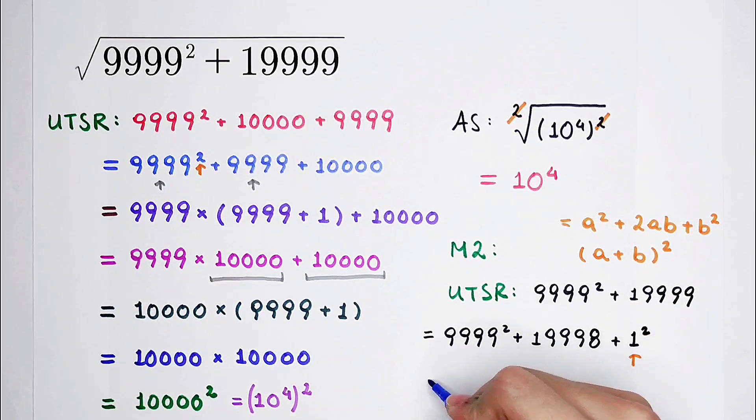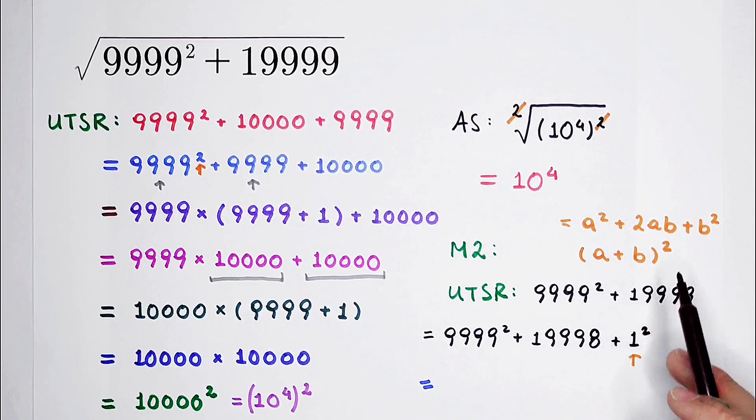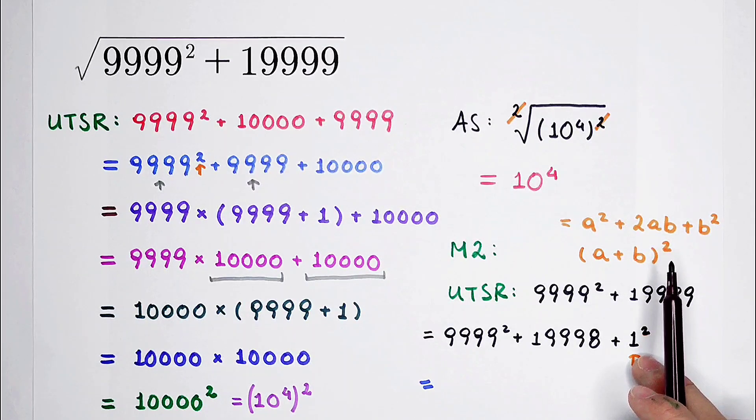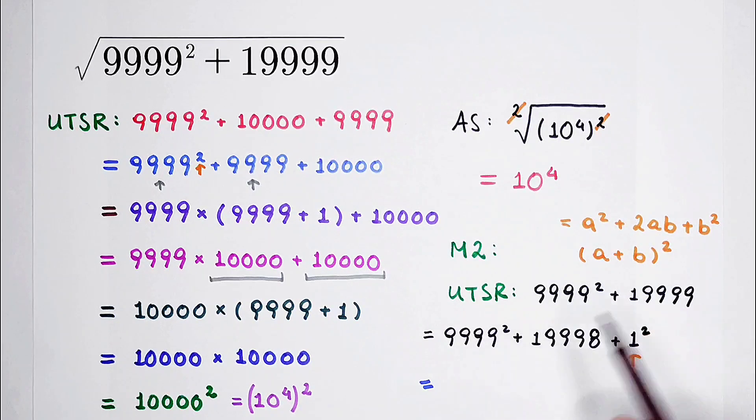And we know that 9999 squared, and then plus 1 squared, and then plus 19998, it is 2 times 9999 and then times 1. It is exactly 2 times AB, where A is 9999 and B is 1.